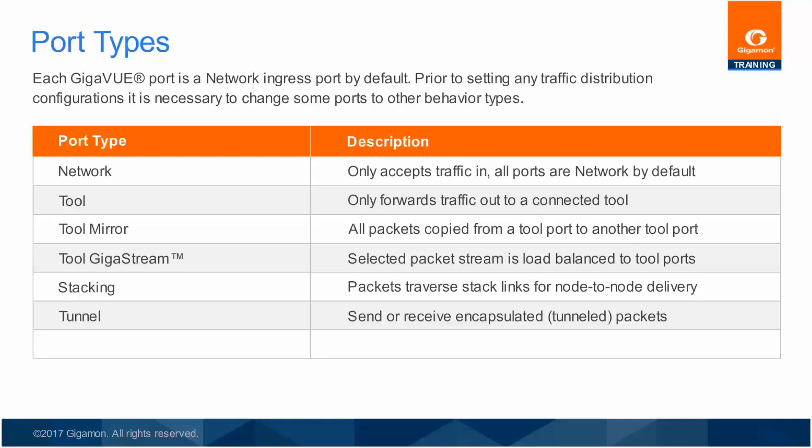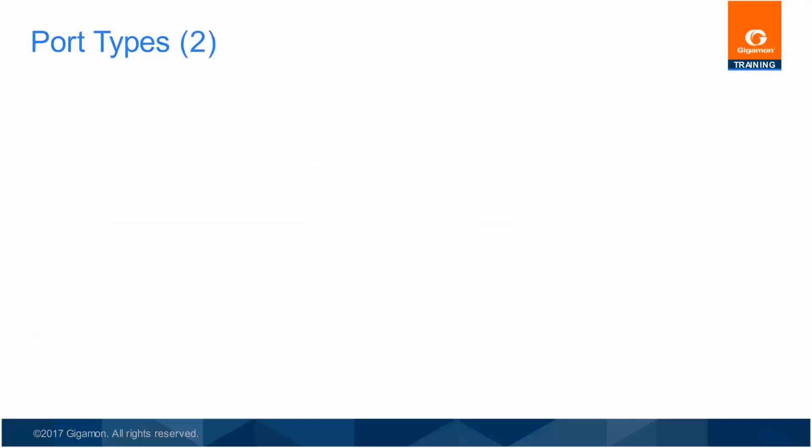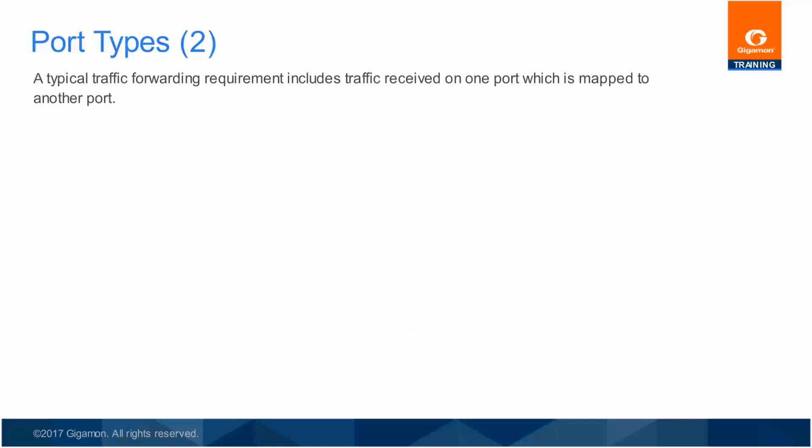Port Pair is a bi-directional connection in which traffic arriving on one port in the pair is transmitted out the other, like a conventional tap. Traffic passing through the logical tap is available as network ingress traffic for mapping operations. As noted, there are two port types which are used most commonly: network ingress and tool egress.